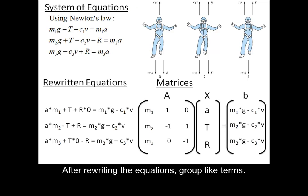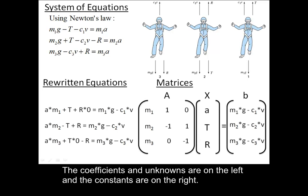After rewriting the equations, group like terms. The coefficients and unknowns are on the left, and the constants are on the right.